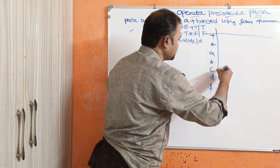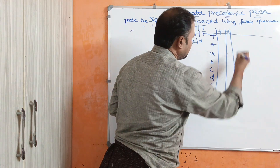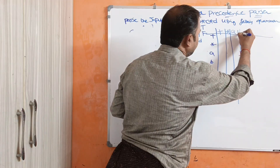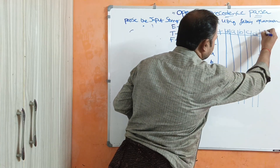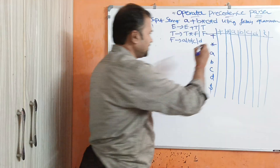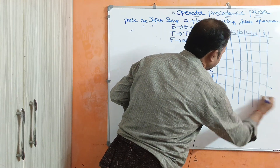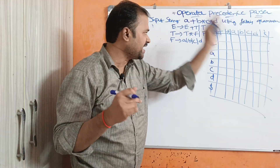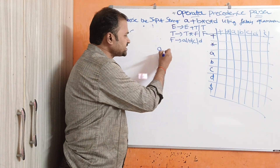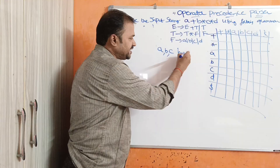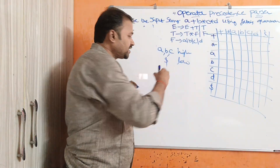Now we have to fill this table following some rules. Identifiers A, B, C, D have higher priority, and dollar has lower priority. The rows represent the top of the stack elements, and the columns represent the input string symbols. If top of stack is plus and input symbol is plus — since plus is left associative — we give more priority to the left plus. Similarly, if top of stack is star and input symbol is star, we give more priority to the stack star because star is left associative and has higher priority.